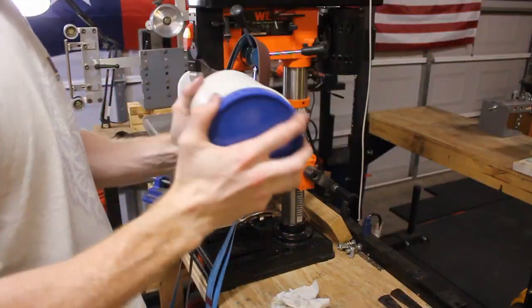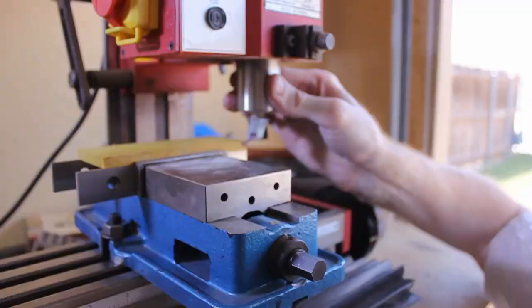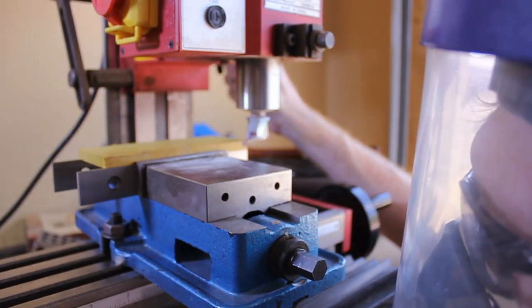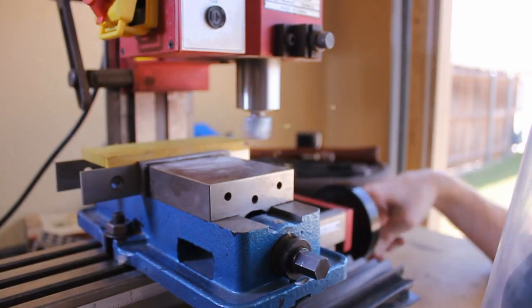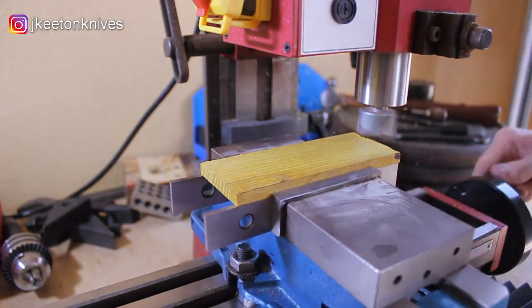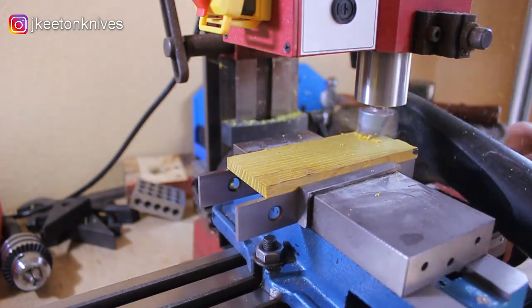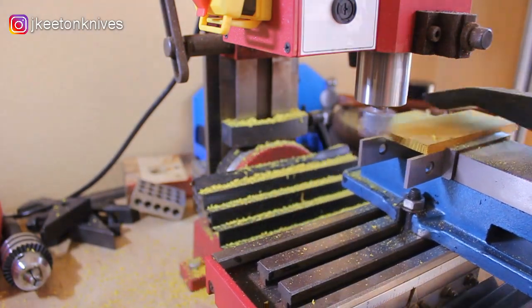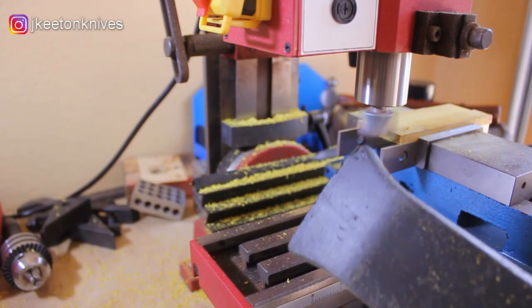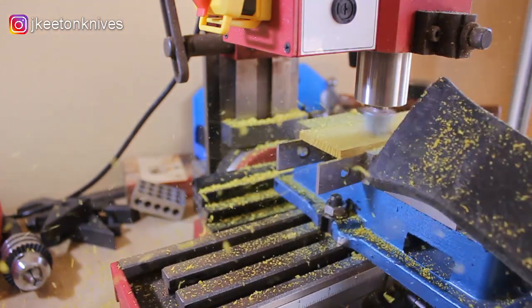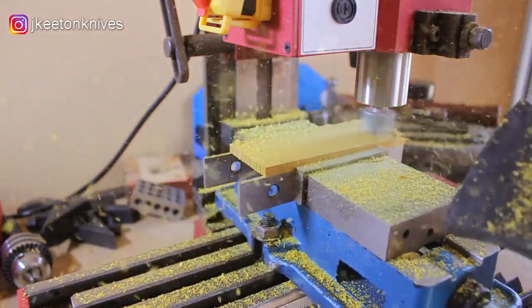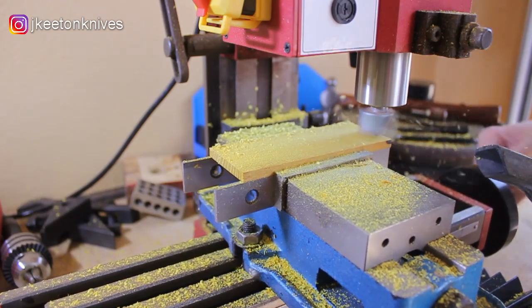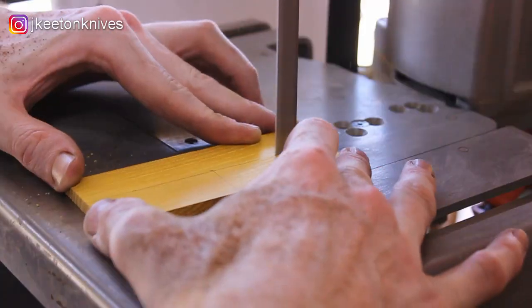Moving on to the handle scales, we're using Osage orange wood from Pops Knife Supply. It comes a little thicker than I like to use, so I took a router bit, put it on my mini mill, and brought these scales down to a quarter inch.